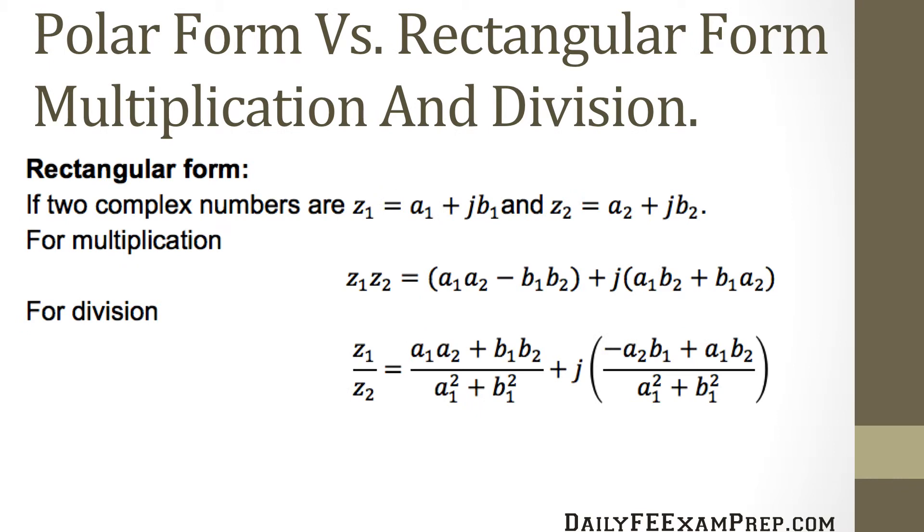Polar form versus rectangular form multiplication and division is described like this. In rectangular form, if two complex numbers are z1 equals a1 plus j times b1 and z2 equals a2 plus j times b2, then z1 times z2 equals a1 times a2 minus b1 times b2 plus j times a1b2 plus b1a2.